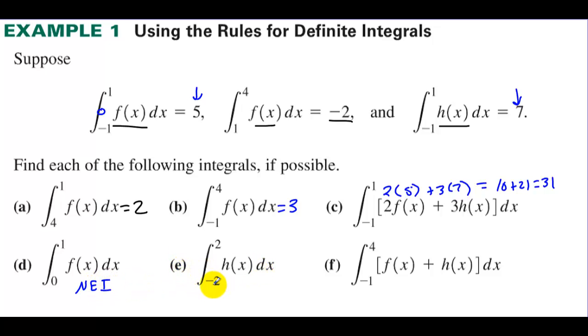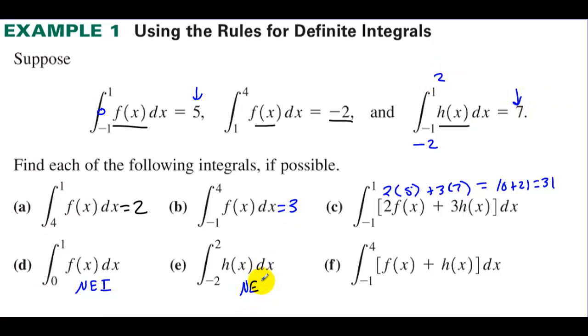Letter E: integrate from negative 2 to 2 of h(x). They want you to think that if you integrate from negative 2 to 2, you can just double the 7. That's not true either — not enough information.